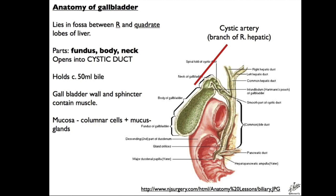The function of the gallbladder is to concentrate bile and act as a reservoir for it. It's found in the midclavicular line at the costal margin, and lies in the fossa between the right and quadrate lobes of the liver. The other lobes are the caudate and the left lobe. The parts of the gallbladder are the fundus, the body, and the neck. There's also a mucosa made of columnar cells and mucous glands. The biliary tract starts with the right and left hepatic duct, and joining that is the cystic duct from the gallbladder, which forms the common bile duct, running down to the second part of the duodenum, joining with the pancreatic duct in most people.